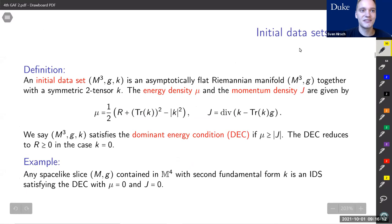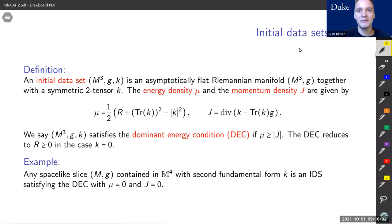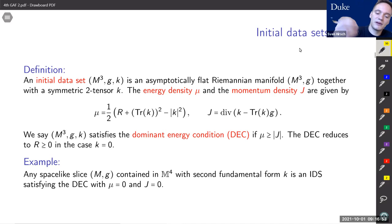Let's proceed to the spacetime setting. The object we are studying now is a so-called initial data set, which is a triple (M, g, k). Here (M, g) is an asymptotically flat manifold as before, and k is a symmetric two-tensor. To this g and k we can associate the so-called energy and momentum densities μ and J. We say that (M, g, k) satisfies the dominant energy condition if μ ≥ |J|. Note that when k = 0, the dominant energy condition reduces to non-negative scalar curvature — so you can think of it as a generalization of non-negative scalar curvature.